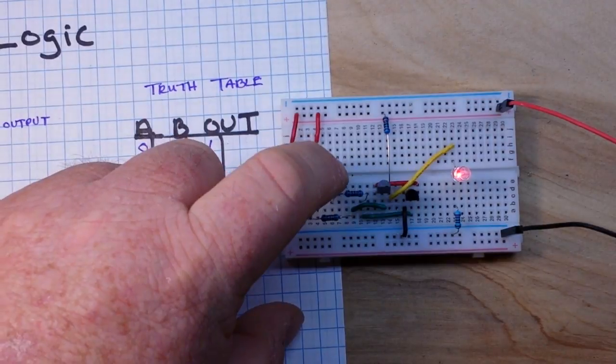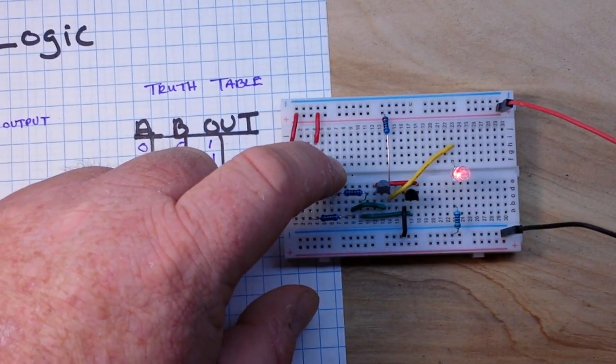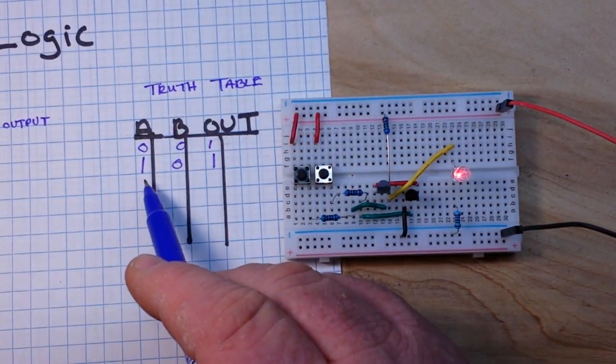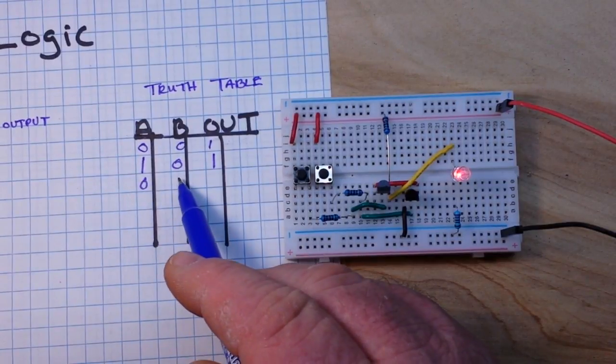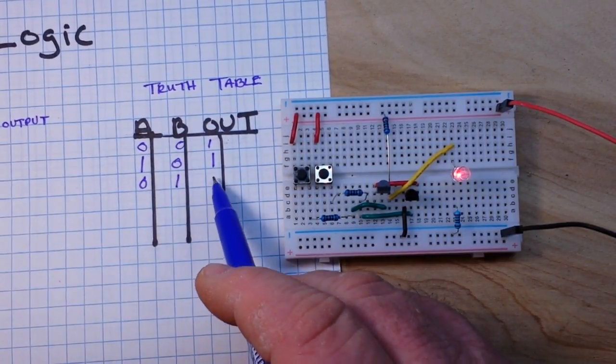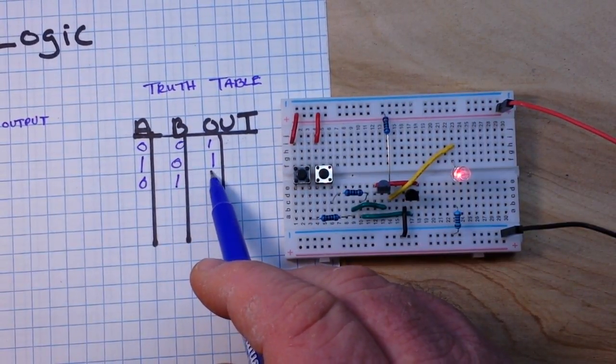And then if we make B true: A false, B true, our output is still 1.